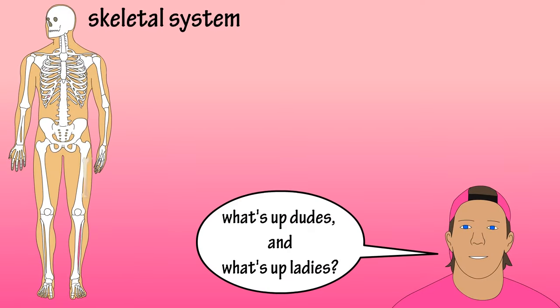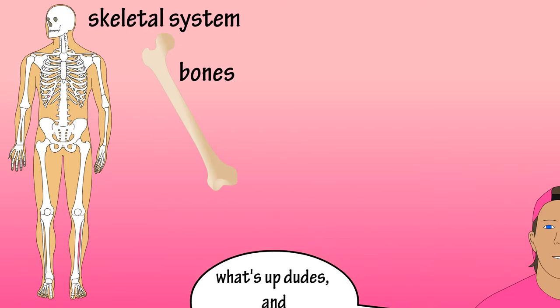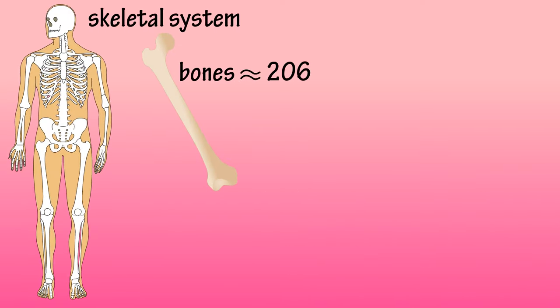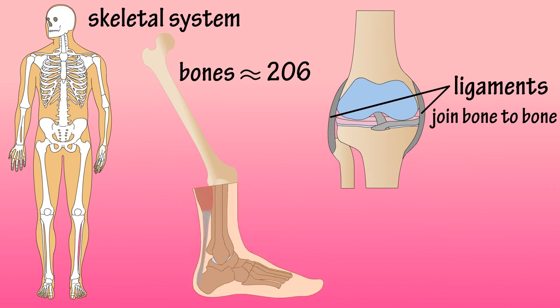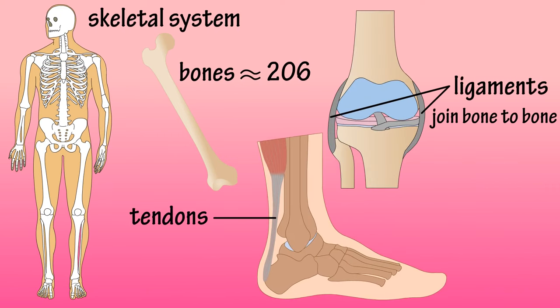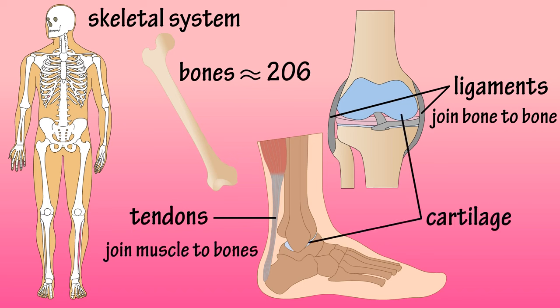The skeletal system's main components include bones, of which the body has 206 in total, ligaments, which join one bone to another, tendons, which connect muscles to bones, and cartilage, which is a form of connective tissue.